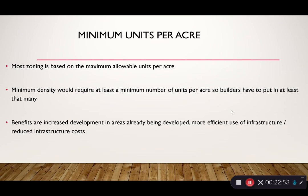Minimum units per acre is another tool. Most zoning is based on maximum allowable units per acre — you can build up to eight units. A minimum units per acre standard would say you have to build at least eight units per acre, requiring the developer to maximize the use of every lot. This ensures maximum development and maximum use of space, increasing housing supply by maximizing land use.